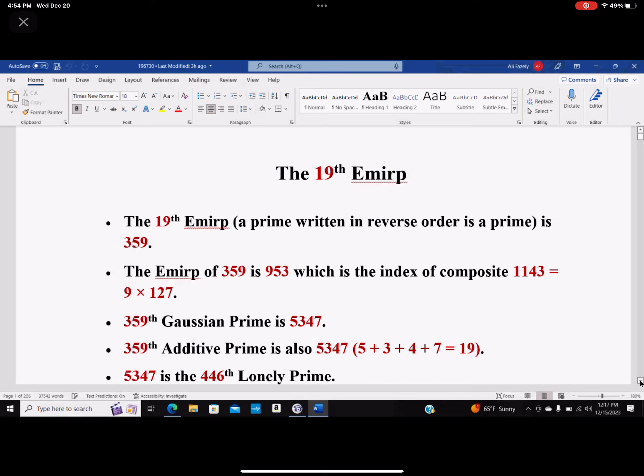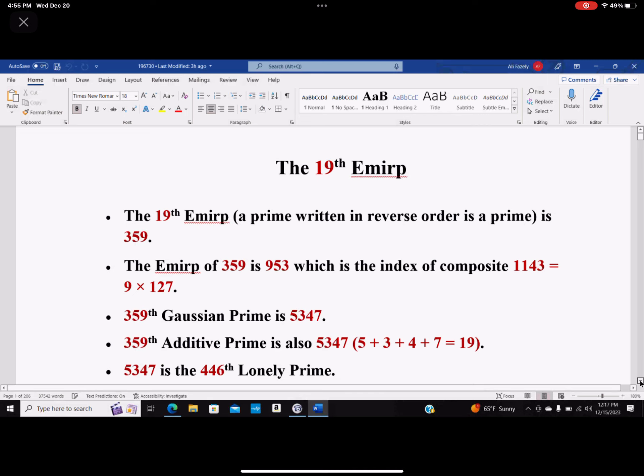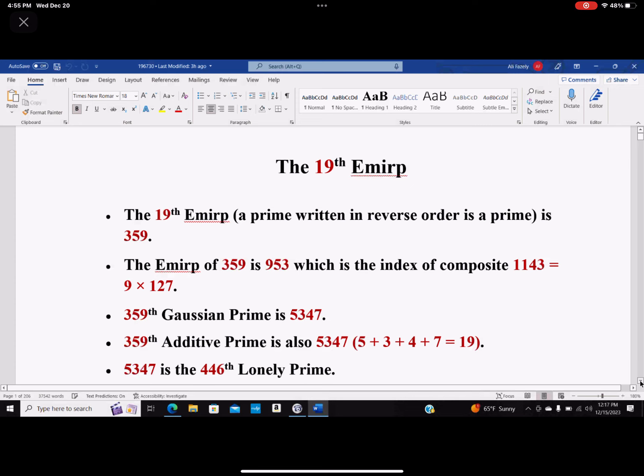You can read chapter 3, verse 59, and see what it says. EMIRP of 359 is 953, which is the index of composite 1143, and 1143 equals 9 times 127. So immediately it will take you to chapter 9, having 127 verses.